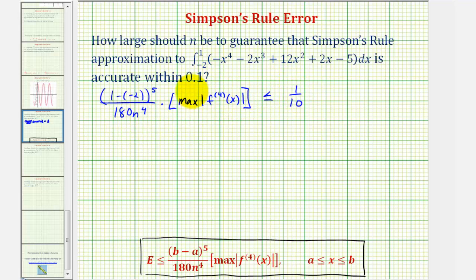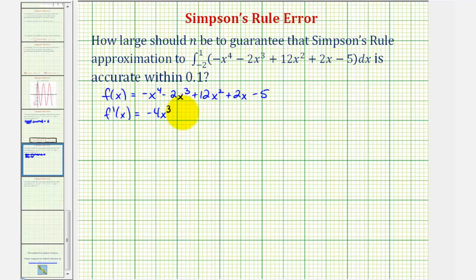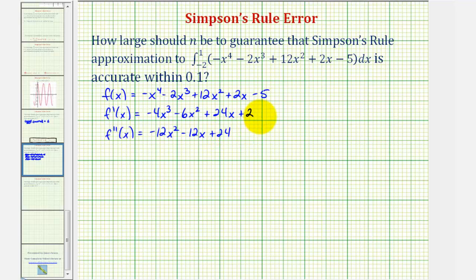Now let's work on finding this maximum function value. Remember, it's going to be the absolute value of this maximum, so if it happens to be negative, we are going to take the absolute value. Starting with our function f(x), which is the integrand function, we work to find the fourth derivative. The first derivative is negative 4x cubed minus 6x squared plus 24x plus 2, and the second derivative is negative 12x squared minus 12x plus 24.